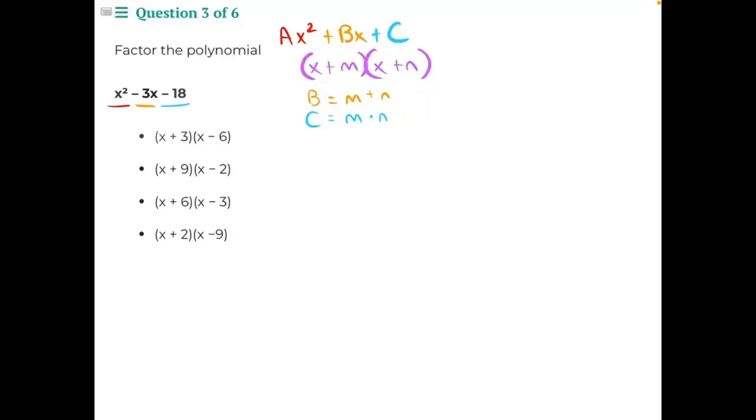Factor the polynomial x squared minus 3x minus 18. In order to factor this polynomial into two sets of binomials as shown here, we're going to need to start by looking at our c value, negative 18.